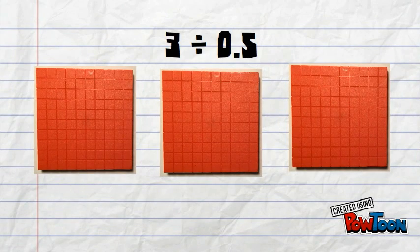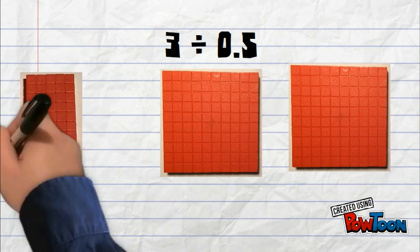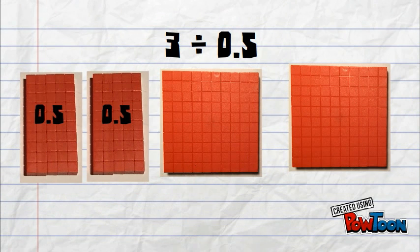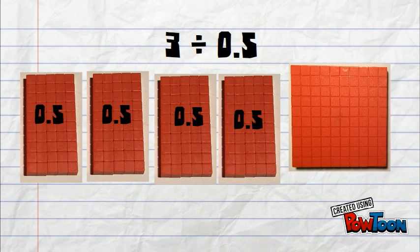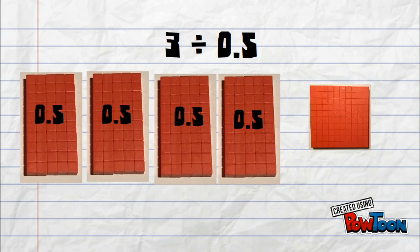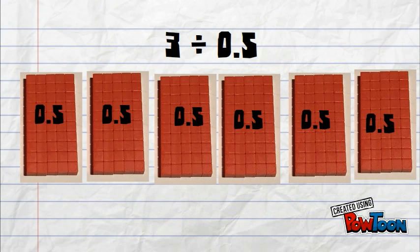Let's start creating groups of 5 tenths. In my first flat, I have 2 groups of 5 tenths. In my second flat, I also have 2 groups of 5 tenths. And my third flat also has 2 groups of 5 tenths.